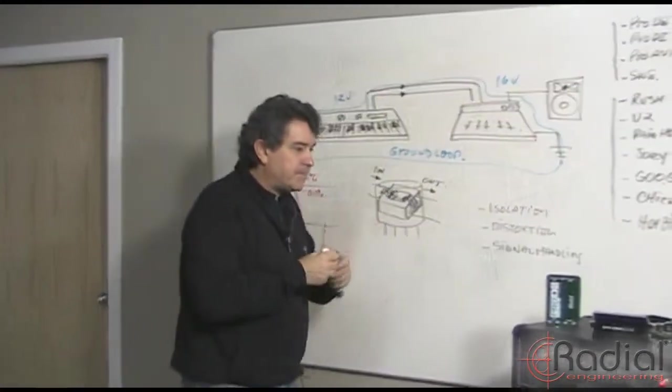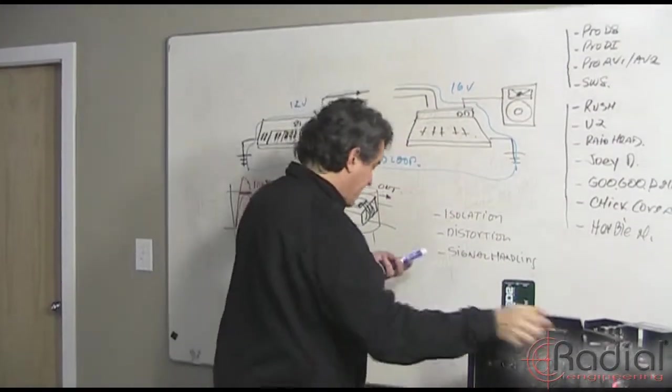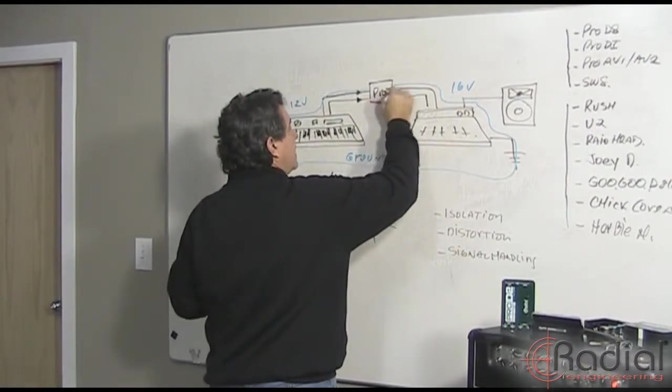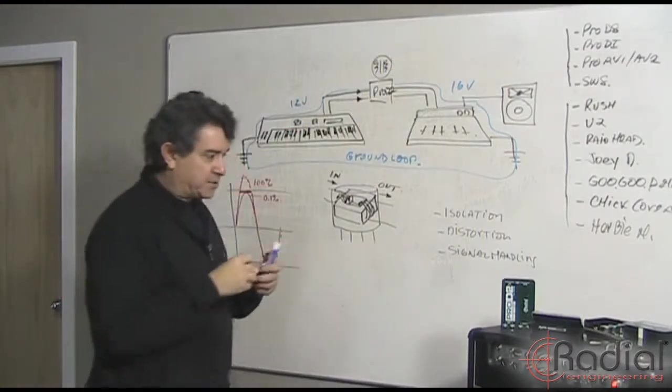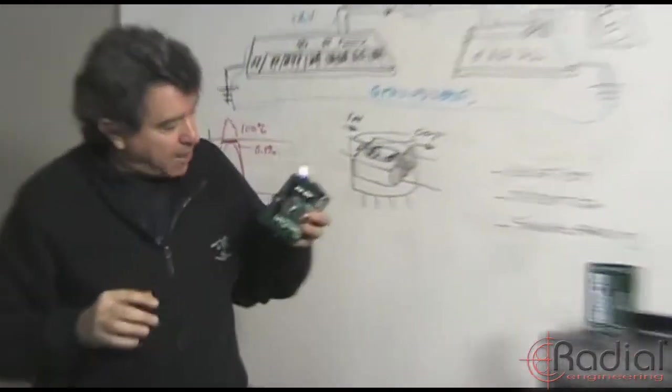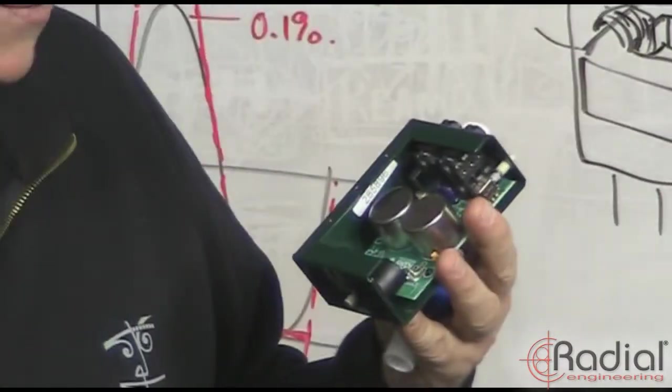So what we do is we simply insert in between them a Pro D2 DI box. So here's your Pro D2. And the Pro D2 is basically a transformer device. In other words, inside it has a couple big fat transformers. These are optimized for keyboards. They're just a great sounding transformer.